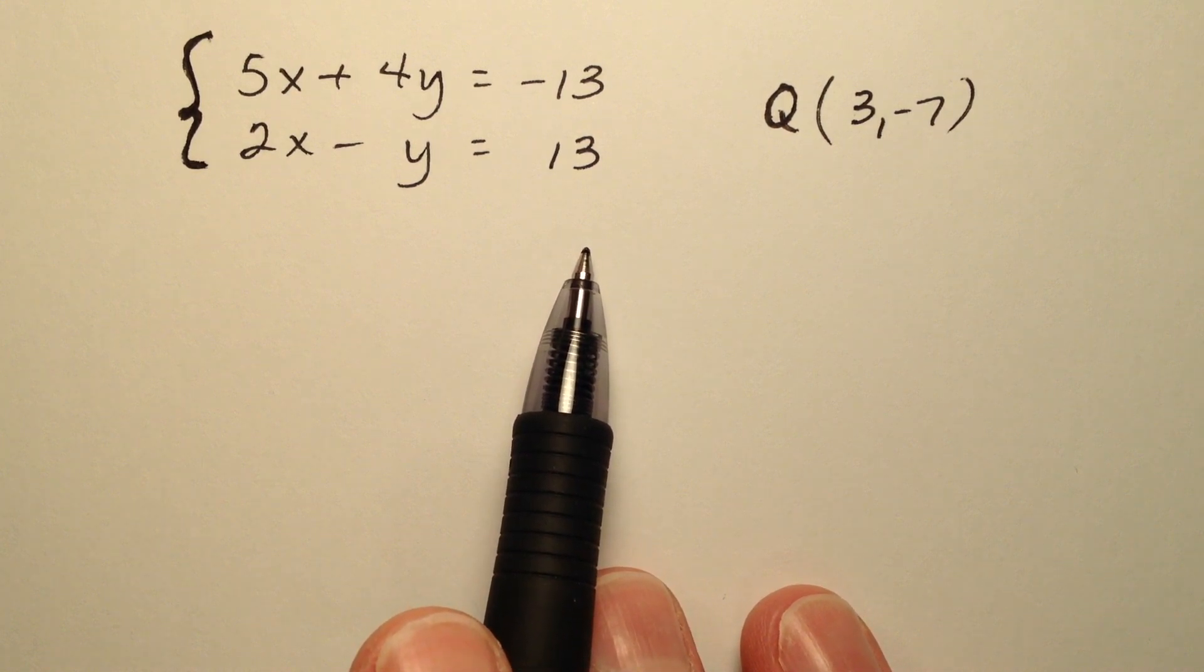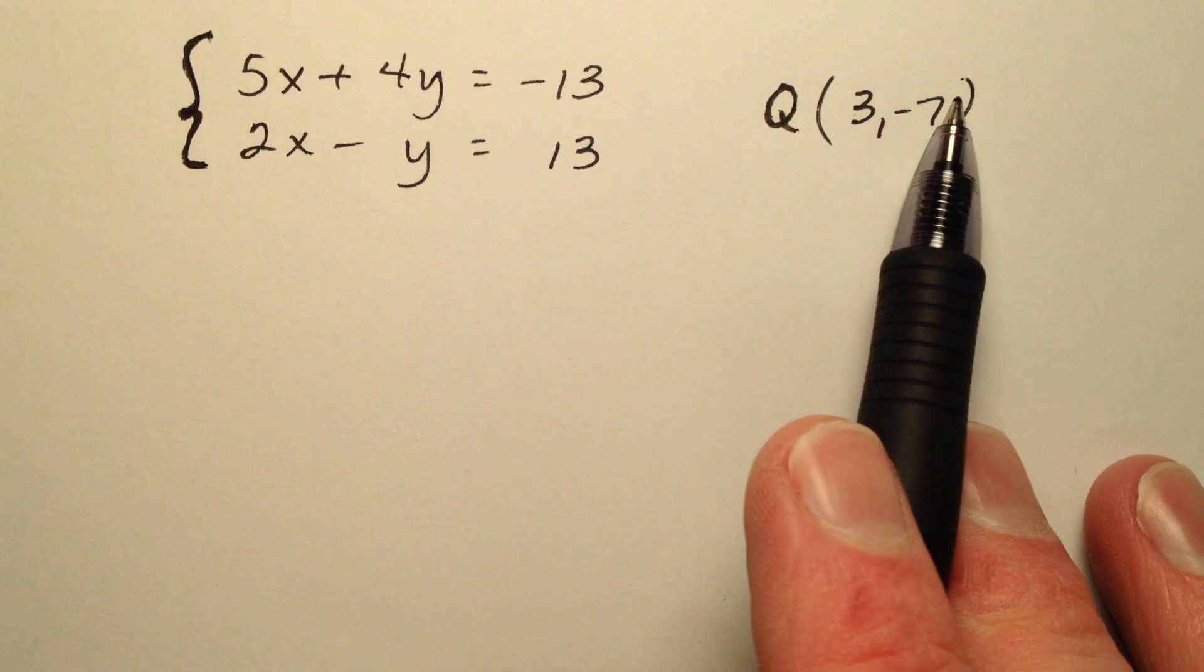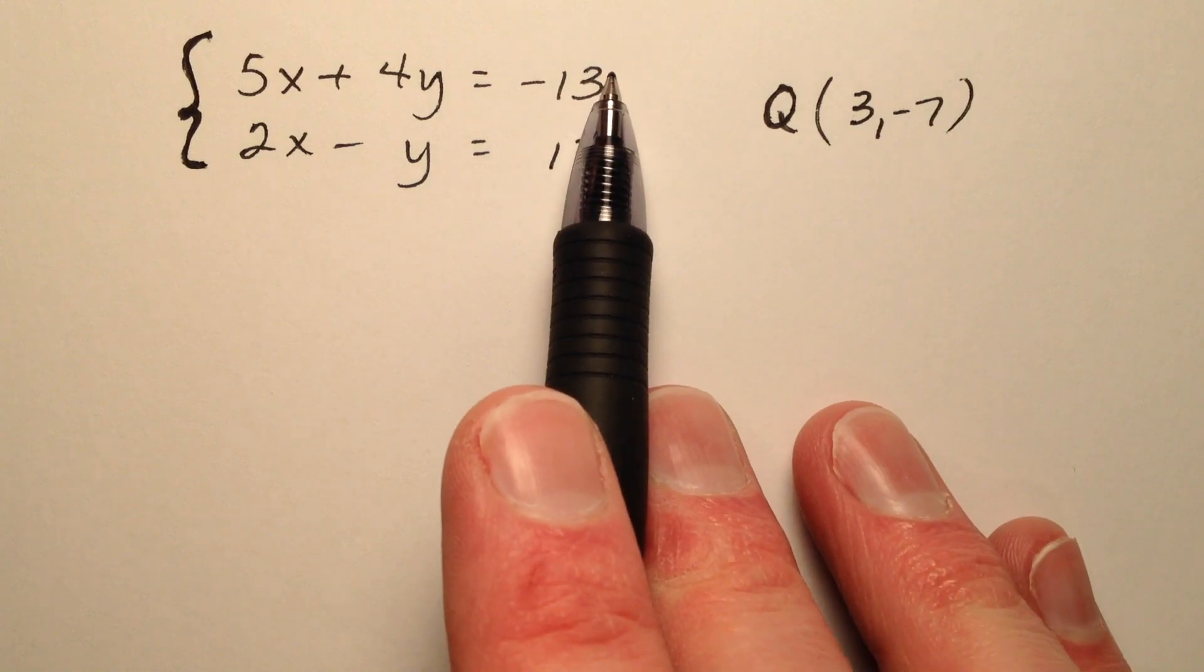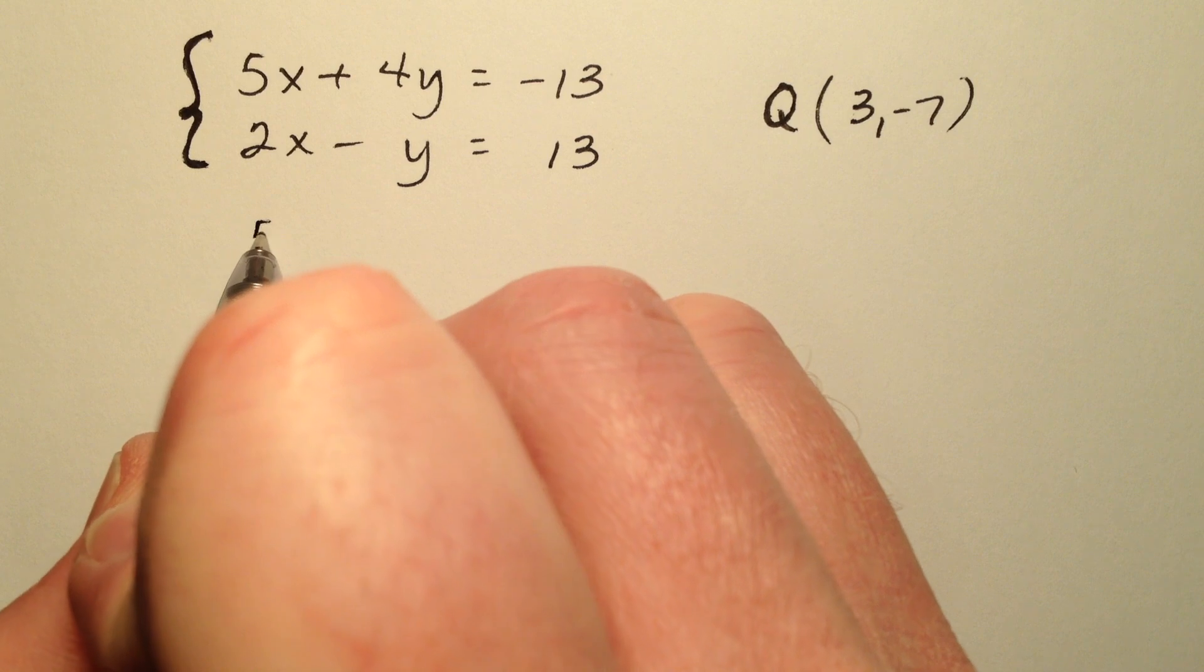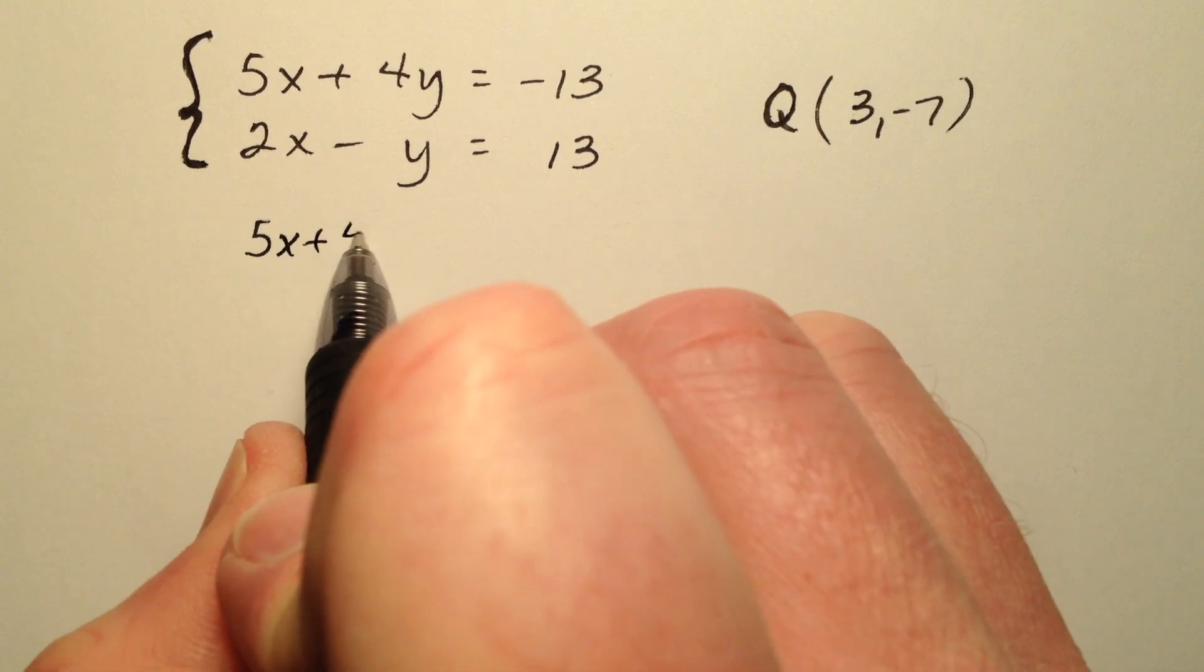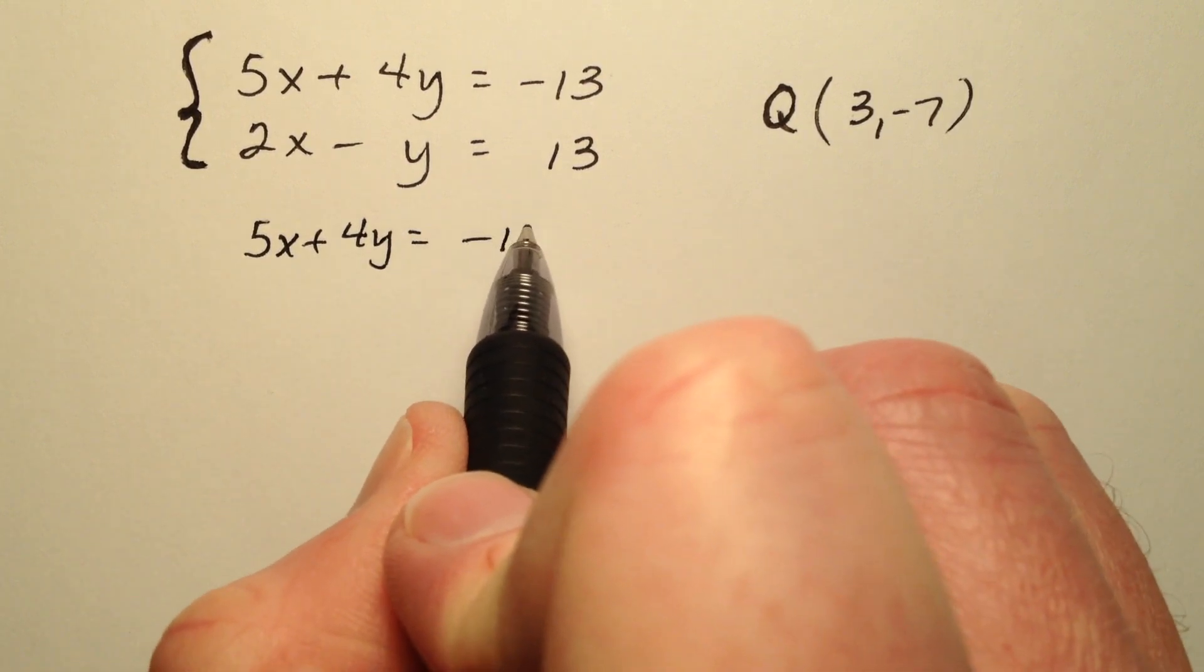Remember, in order to be a solution of a system, this ordered pair needs to be a solution of every single equation in the system. So we're going to go one at a time. We'll check the first one first and then we'll go ahead and check the second one.